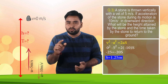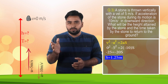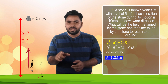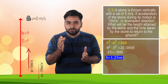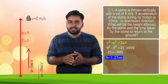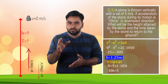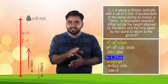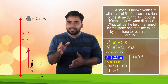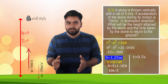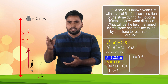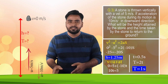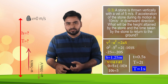Using v² - u² = 2as: 0² - 5² = 2 × (-10) × s, so -25 = -20s, giving s = 1.25 meters. For time, using v = u + at: 0 = 5 + (-10)t, so 10t = 5, giving t = 0.5 seconds to go up. Doubling gives total time of 1 second to return back to the ground.